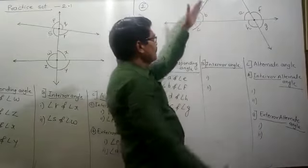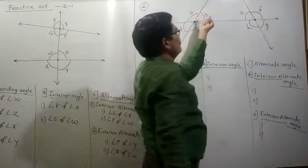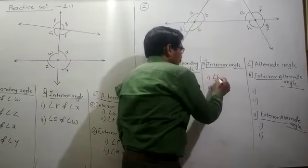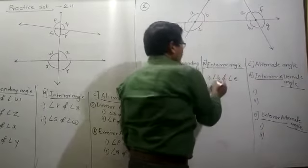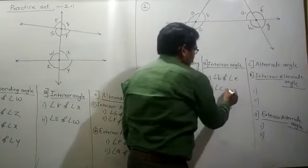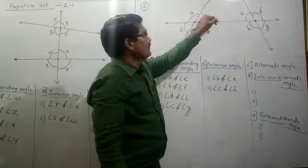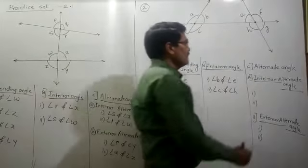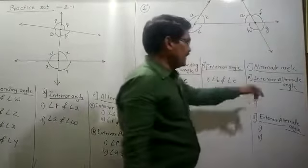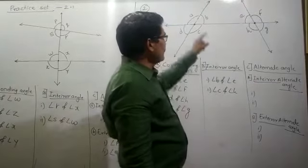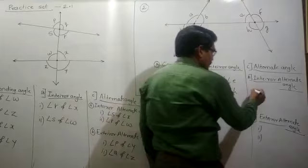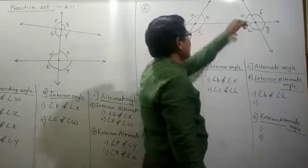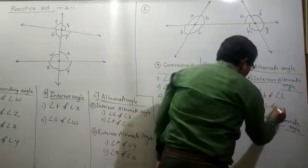Now find out the interior angles. Within the two lines, the interior angles are angle B and angle E, and angle C and angle H. These are the interior angle pairs. Then for the alternate angles — alternate angles are divided into two parts: interior alternate and exterior alternate. The interior alternate angles are angle B and angle H, and angle C and angle E.